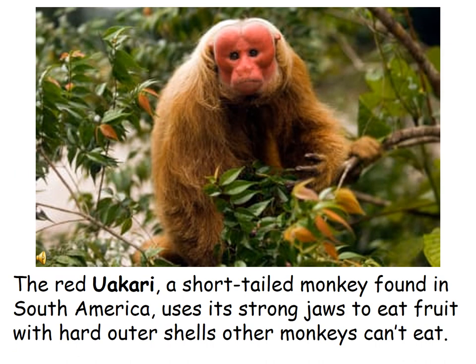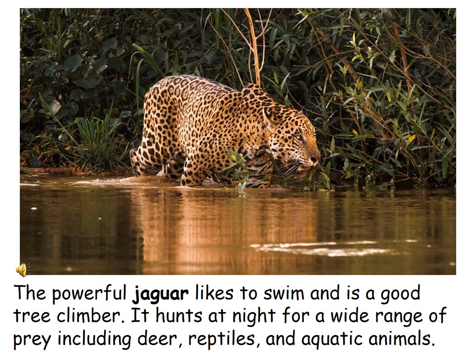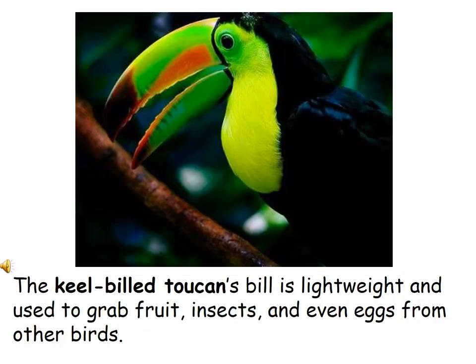The red uakari is a short-tailed monkey found in the Amazon rainforest of South America. It uses its strong jaws to eat fruit with hard outer shells that other monkeys can't eat. The powerful jaguar likes to swim and is a good tree climber. It hunts at night for a wide range of prey including deer, reptiles, and aquatic animals. The keel-billed toucan's bill is lightweight and used to grab fruit, insects, and even eggs from other birds. Could this be Toucan Sam?